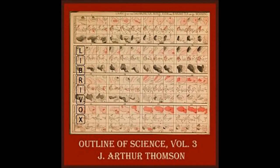Gilbert White (1777) appreciated the earthworm's importance: 'Earthworms, though in appearance a small and despicable link in the chain of nature, yet if lost would make a lamentable chasm. Worms seem to be the great promoters of vegetation, which would proceed but lamely without them, by boring, perforating, and loosening the soil and rendering it pervious to rains and the fibres of plants, by drawing straws and stalks into the soil, and most of all by throwing up such infinite numbers of lumps of earth. The earth without worms would soon become cold, hard-bound, and void of fermentation, and consequently sterile.' When a young student, Charles Darwin began studying the work of earthworms.